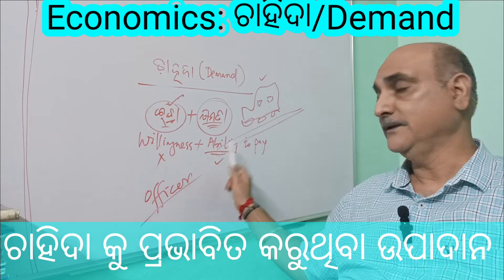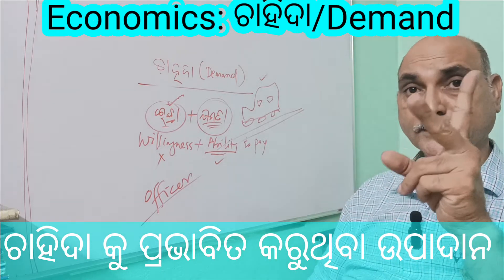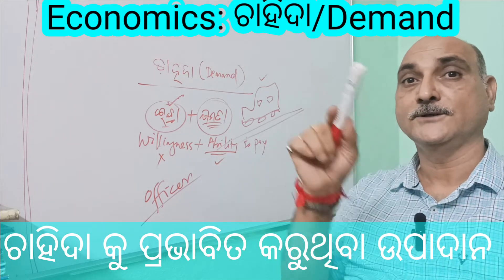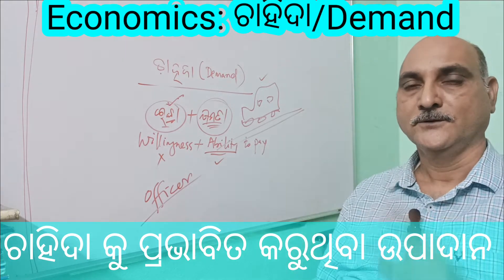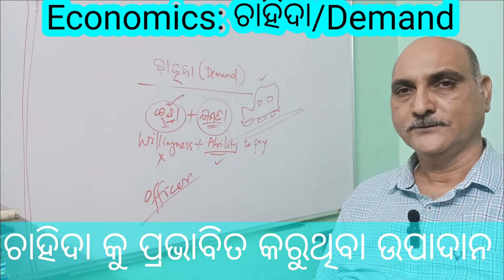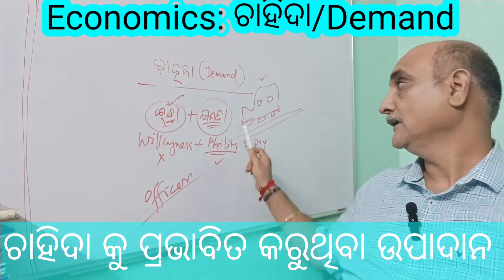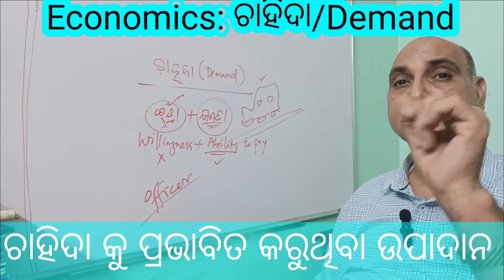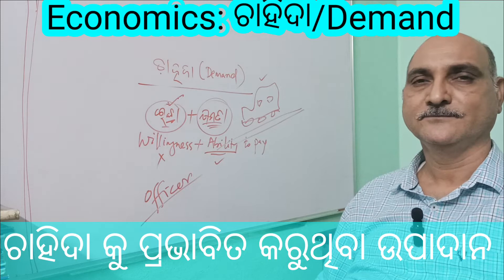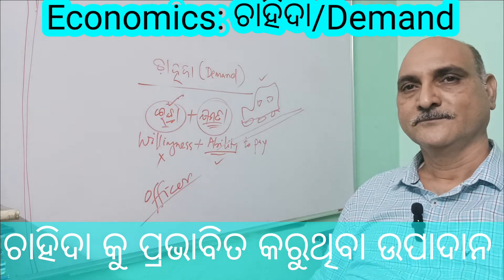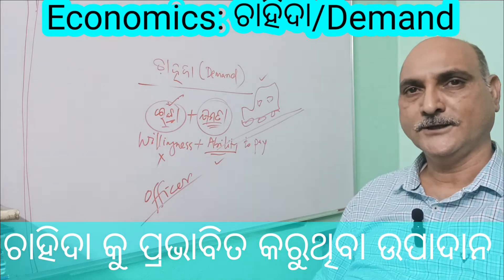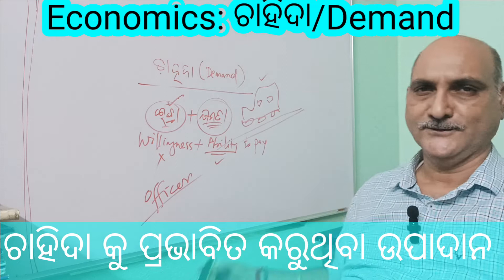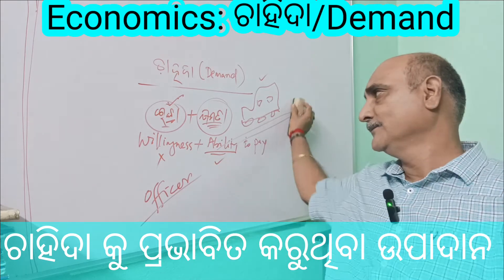Willingness and ability to pay — if both things are combined together, one commodity is bought and one commodity is sold. One car is sold means one demand is created. Now we will go on to study the factors that influence demand.